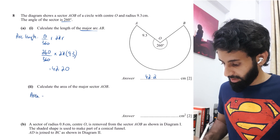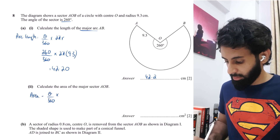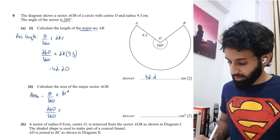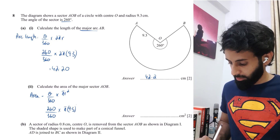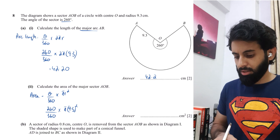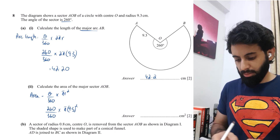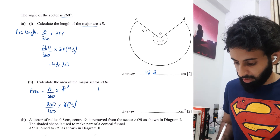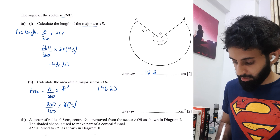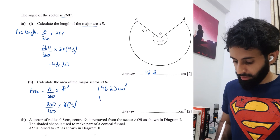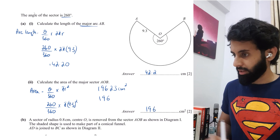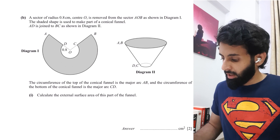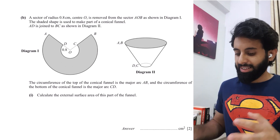Next, calculate the area of the major sector. The formula is (θ/360) × πr². So: 260/360 × π × 9.3². Working this out gives 196.23, and rounded to three significant figures that is 196 cm². That is the correct answer.